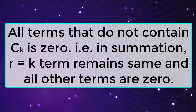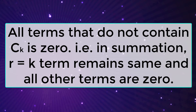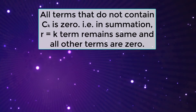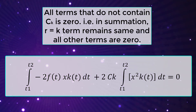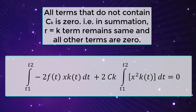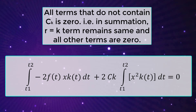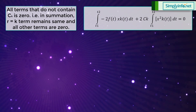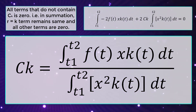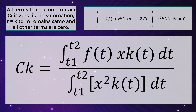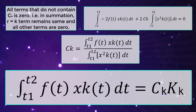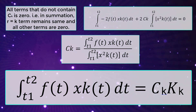All terms that do not contain ck are zero; only the summation term where r equals k remains, and all other terms are zero. This gives: the integral from t1 to t2 of negative 2 times f(t) times xk(t) dt plus 2 times ck times the integral from t1 to t2 of xk(t) squared dt equals zero. Solving for ck: ck equals the integral from t1 to t2 of f(t) times xk(t) dt divided by the integral from t1 to t2 of xk(t) squared dt, which equals the integral from t1 to t2 of f(t) times xk(t) dt divided by kk.